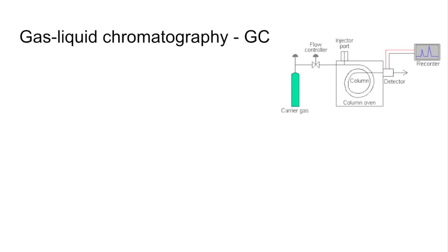Moving on to gas liquid chromatography, or GC for short. I've got a picture here of the process. This is used to separate volatile components in a mixture, things with low boiling points, very useful for analyzing organic compounds.